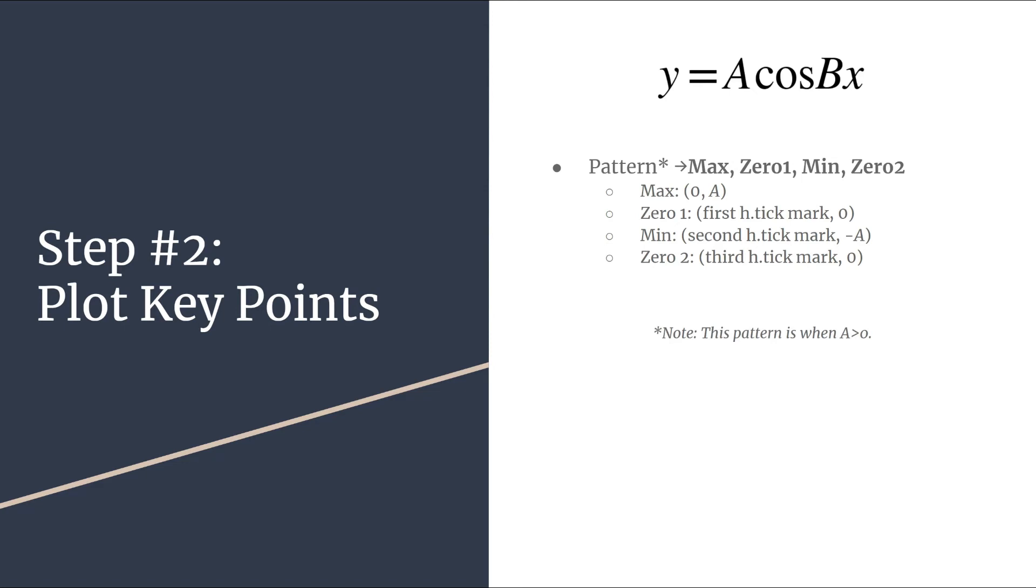So like I said, this is when you have a positive A. If A is negative, it's almost the same, but you're probably also guessing this. Your pattern now will be min zero max zero. So that's just an important thing to note. If I have a negative in my equation, I usually like to circle it. So I know, okay, this is where we'll be starting with a minimum instead of a maximum.